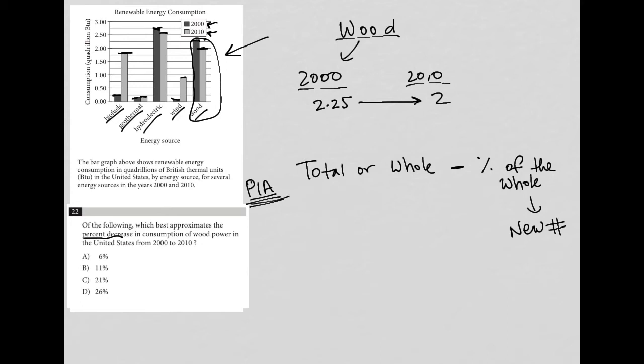So we have all these answers here. I can say, well, I know that in 2000, it was 2.25. So let's see if I were to subtract 6%, right? So choice A, 6% of 2.25, what would happen? So 6% of 2.25 is 2.25 times 0.06.